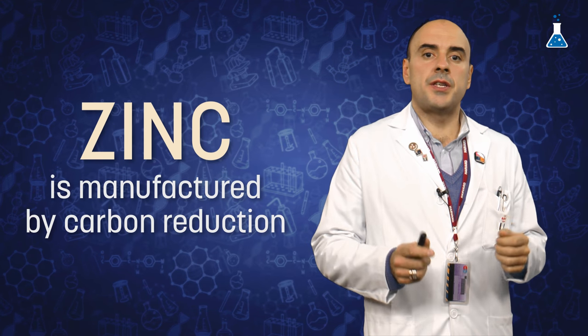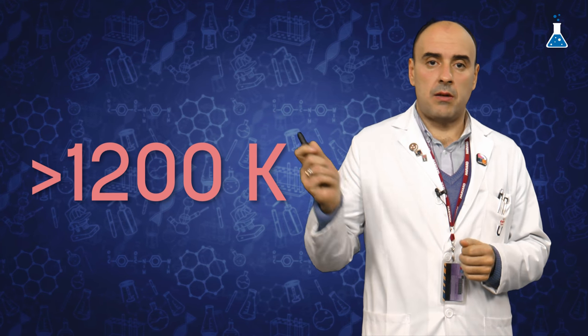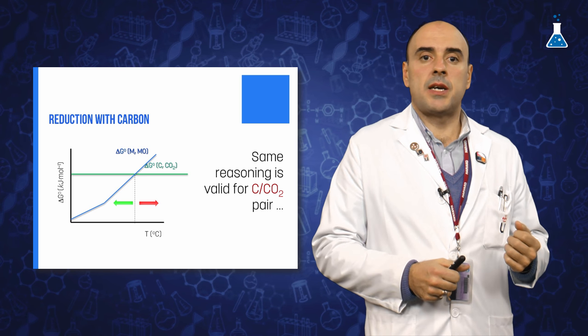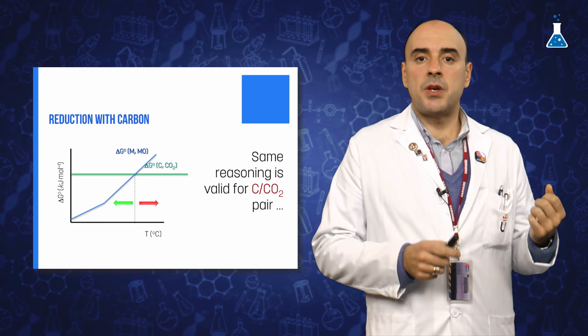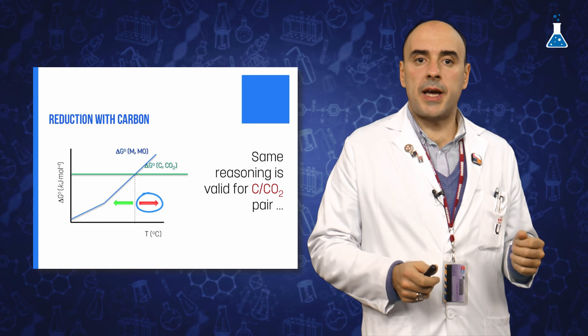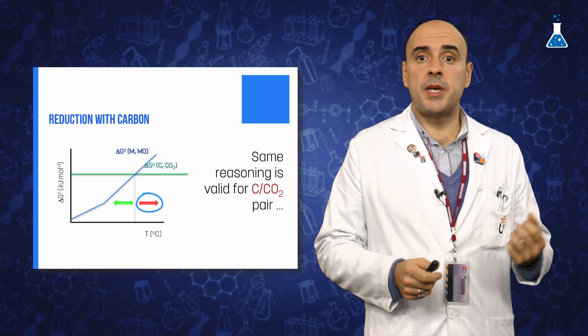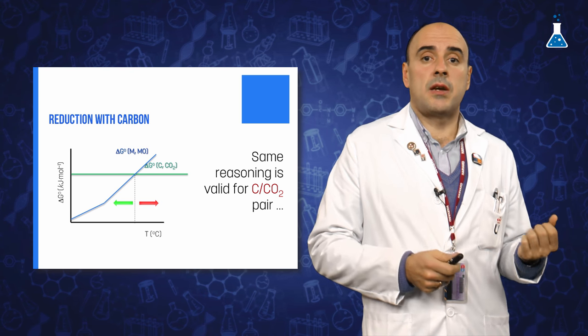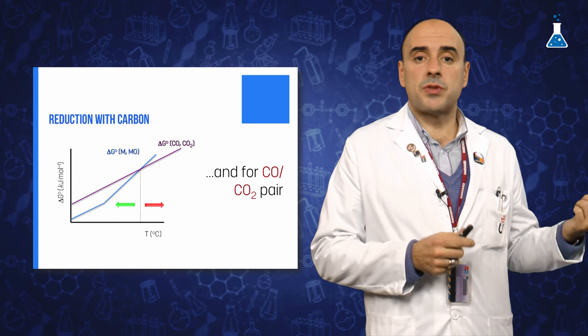For example, tin is manufactured by carbon reduction at temperatures greater than 1200 Kelvin. Similar remarks apply to the other two oxidation lines of carbon. So, for temperatures at which the CO2 line goes below the metal oxide line, then carbon can be employed to achieve this reduction but it is oxidized to carbon dioxide.